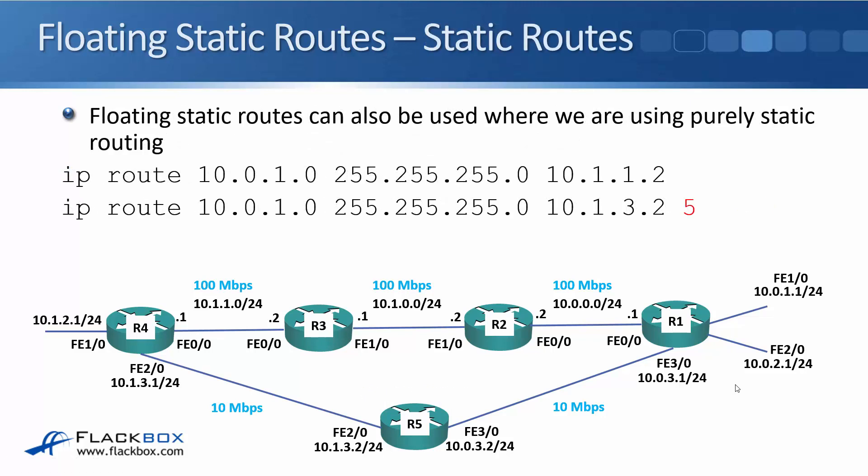You can also use floating static routes where you're using static routes only. On R4, the first choice goes to 10.1.1.2 on R3, and the second choice for the 10.0.1.0 network goes to 10.1.3.2 on R5 by giving it an administrative distance of 5. If you entered both routes without an AD, it would load balance between them. By adding the second route with an AD of 5, only the first route makes it into the routing table. But if the link from R4 to R3 goes down, it will be removed from the routing table and the second route will be used instead.